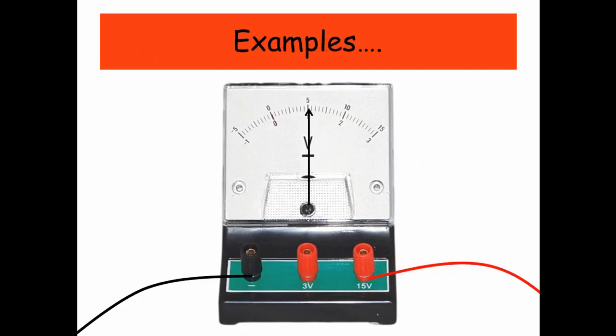So let's have a look at some examples. This voltmeter is reading 5 volts. If you look down at the bottom, the negative terminal is always connected to normally a black cable. The 15 volts is connected up, so we're going to be using the 15 volt scale, which is the scale on the top, and that's pointing at 5. Therefore this is reading 5 volts.